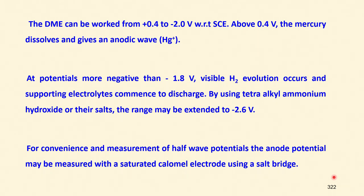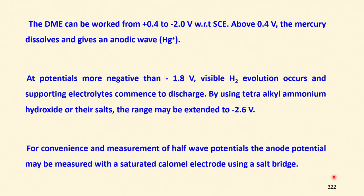At potentials more negative than −1.8 volts, visible hydrogen evolution occurs — we do not want that because water can decompose, giving hydrogen and oxygen, which will take over the polarization system. The supporting electrolytes also start to discharge. By using tetraalkyl ammonium hydroxide or their salts, the range may be extended up to −2.6 volts. For measurement of half-wave potentials, the anodic potential must be measured with a saturated calomel electrode using a salt bridge.